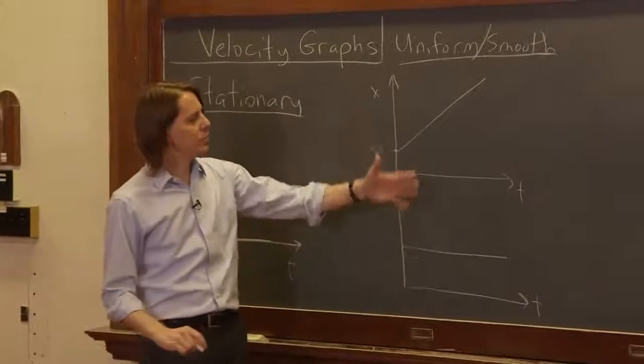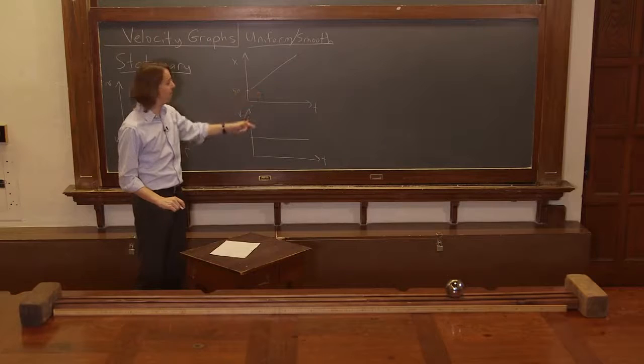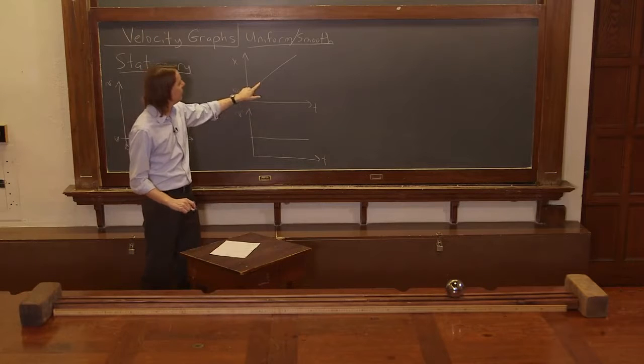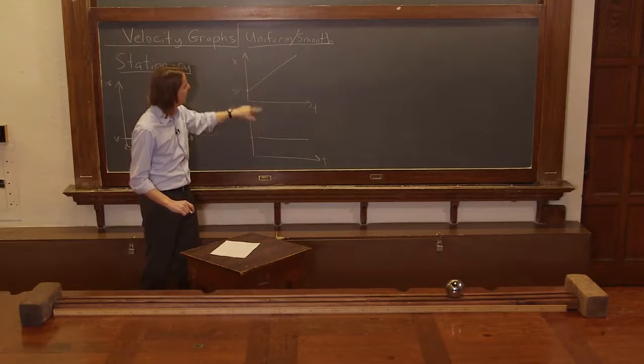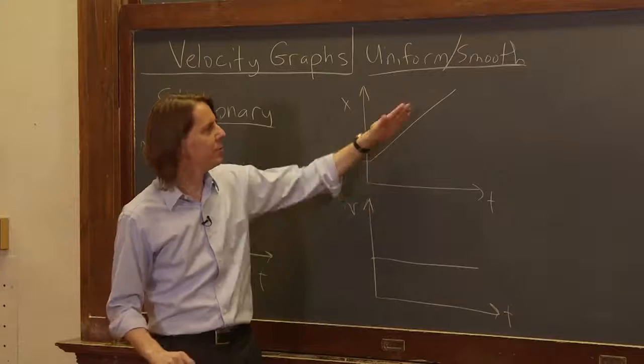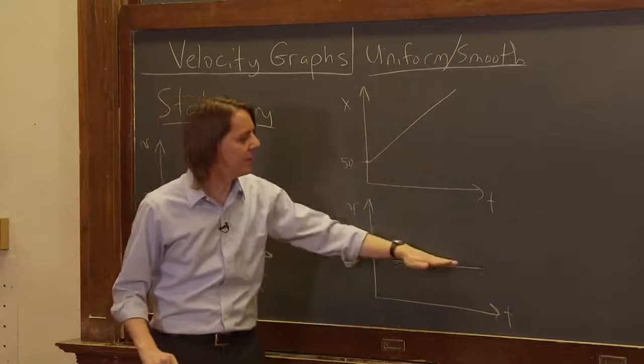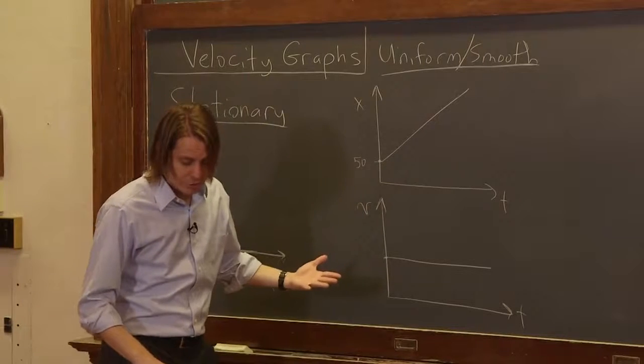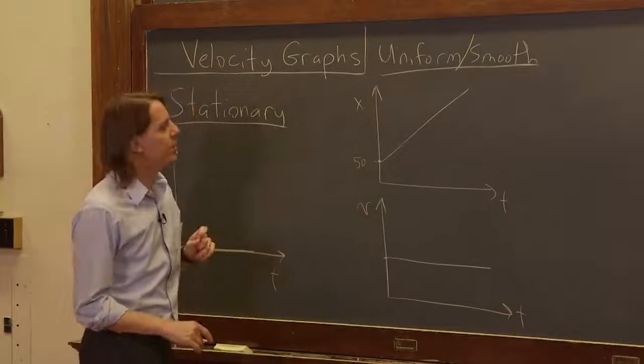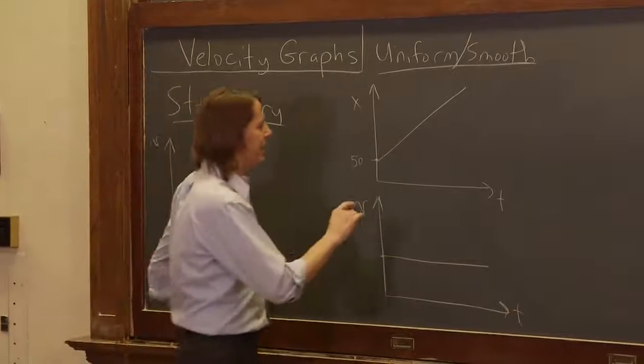You can also use your knowledge of these graphs to know this would be flat because the slope of this position-time graph at any point—this slope—has to be this value. And you can see the slope is constant, right? So since this one has a constant slope, this one has a constant value. That's pretty much all you need, but there is one other interesting thing here.